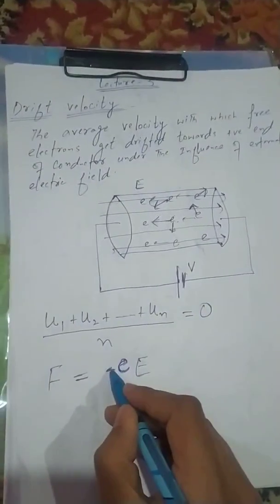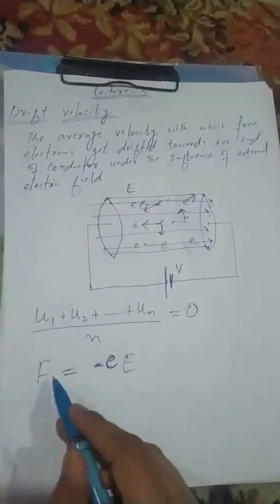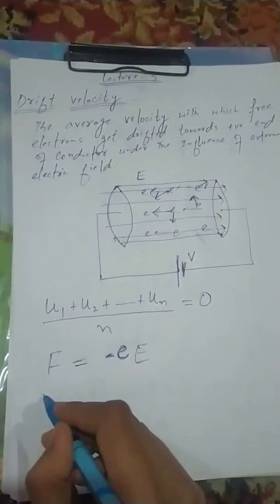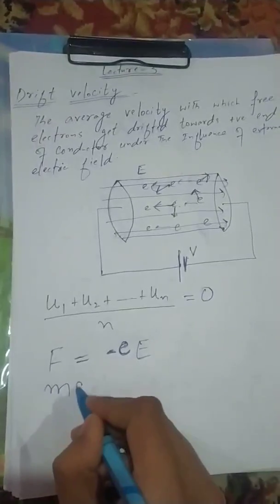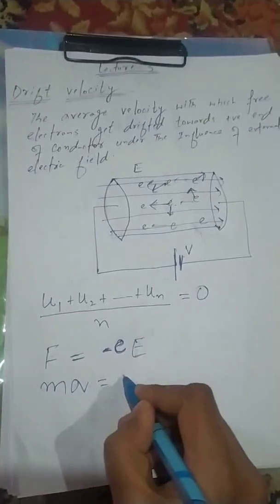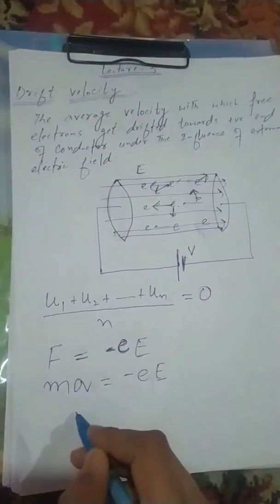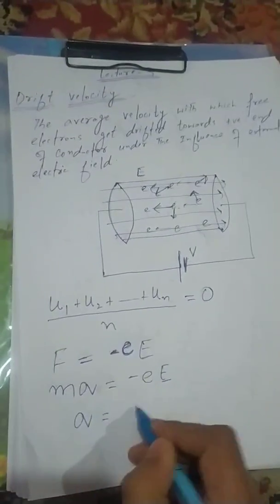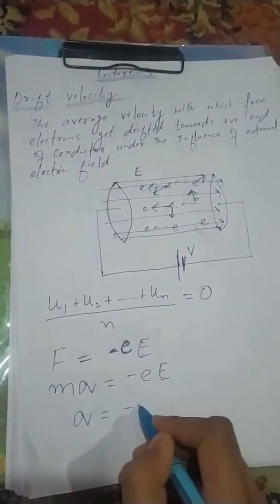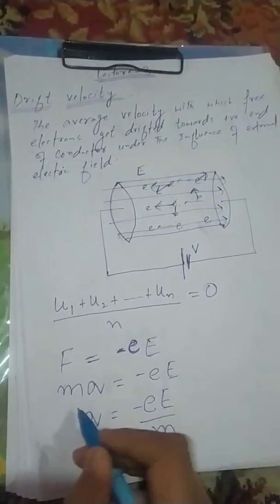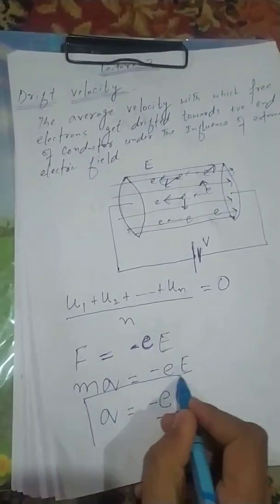The negative sign here indicates that if the electric field is in one direction, the force is opposite. So force is equal to minus eE, and acceleration is equal to eE by m (where m is the mass of the electron).